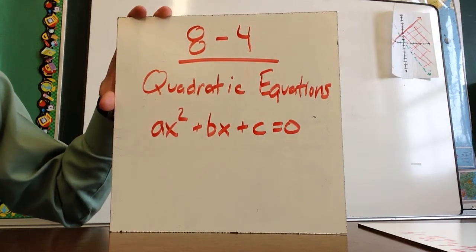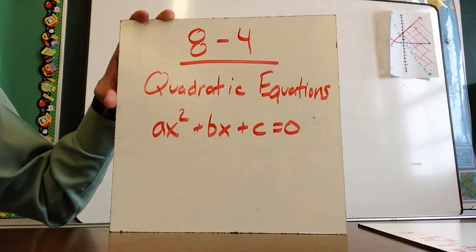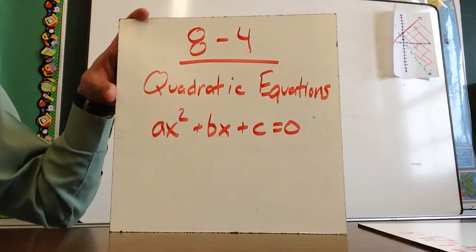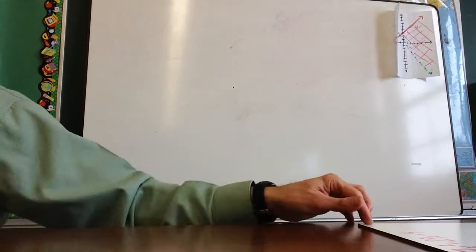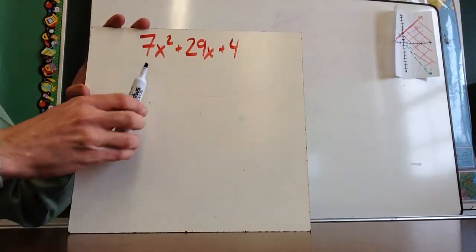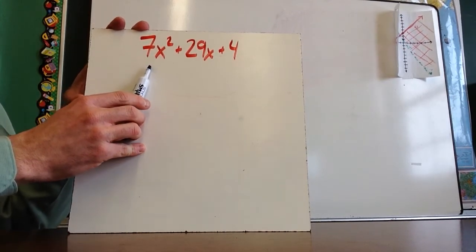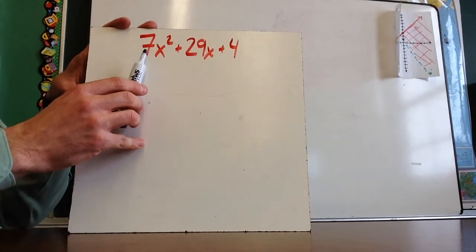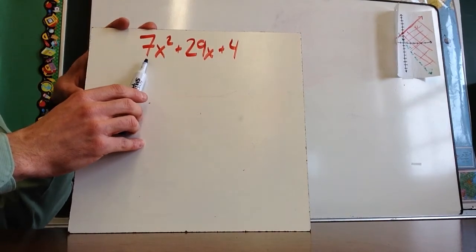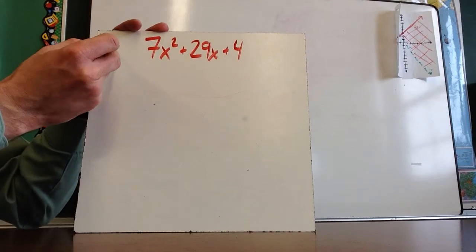This video will discuss chapter 8-4, quadratic equations in the form of ax squared plus bx plus c equals 0. Starting now, if you remember in the last lesson, we did not have a number in front of this x squared, or the number there was a 1. We are now going to start talking about what happens when there's a different number other than 1 in front of the x squared. It's going to be the same idea that we were using before.